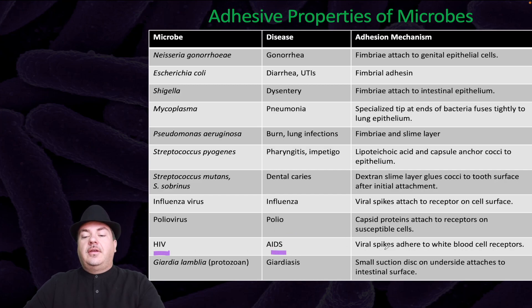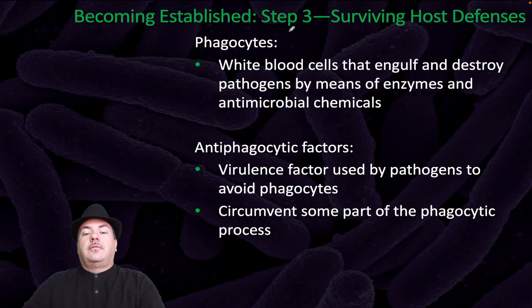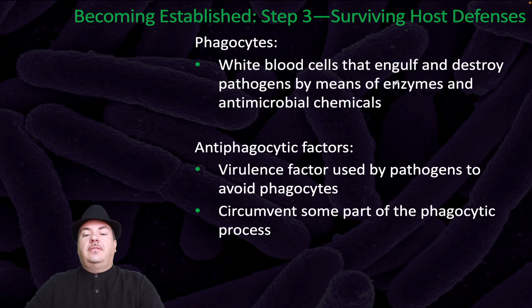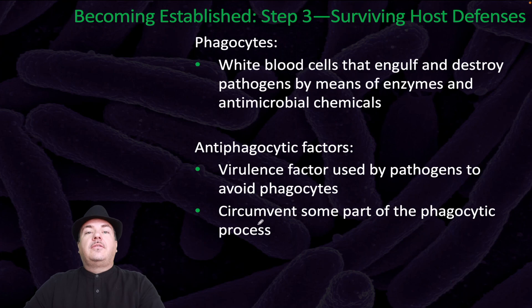Phase three is surviving the host defenses. Phagocytes are white blood cells that engulf and destroy pathogens by means of enzymes and antimicrobial chemicals. Anti-phagocytic factors are virulence factors used by pathogens to avoid phagocytes — they circumvent some part of the phagocytic process.